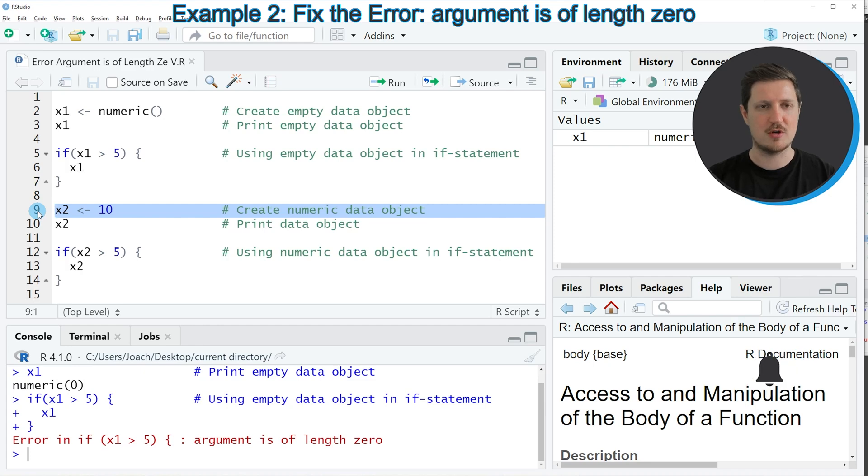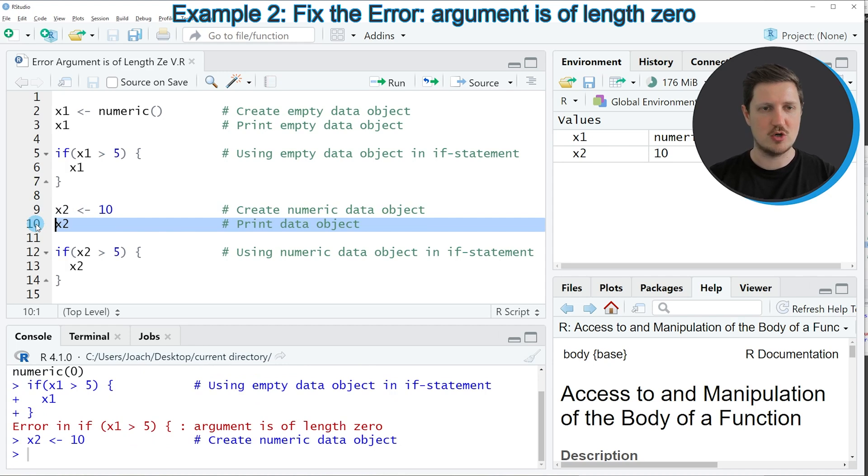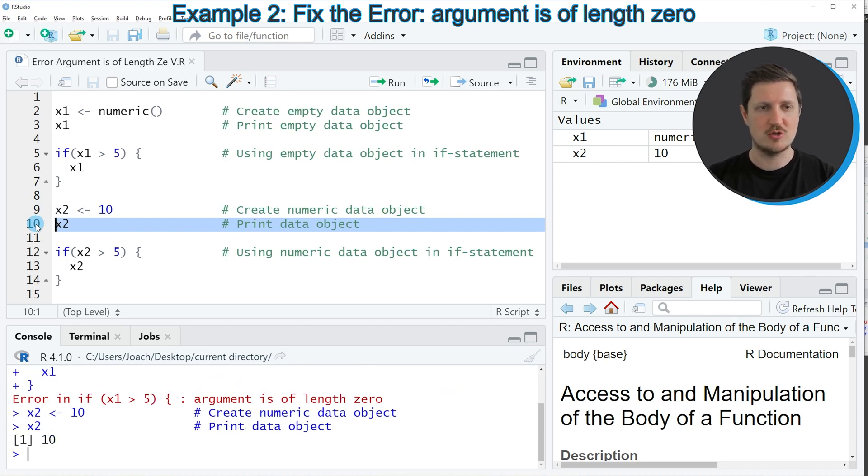So in line 9 of the code, I'm creating another data object which is called X2. We can print this data object to the RStudio console by running line 10 of the code, and then you can see that our data object contains the value 10.